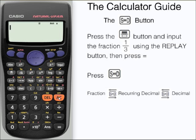I sometimes get asked the question, why is it called the S⇔D button and not the F⇔D button for fractions to decimals? Well that's because you can change surds to decimals as well. So let's try that now.